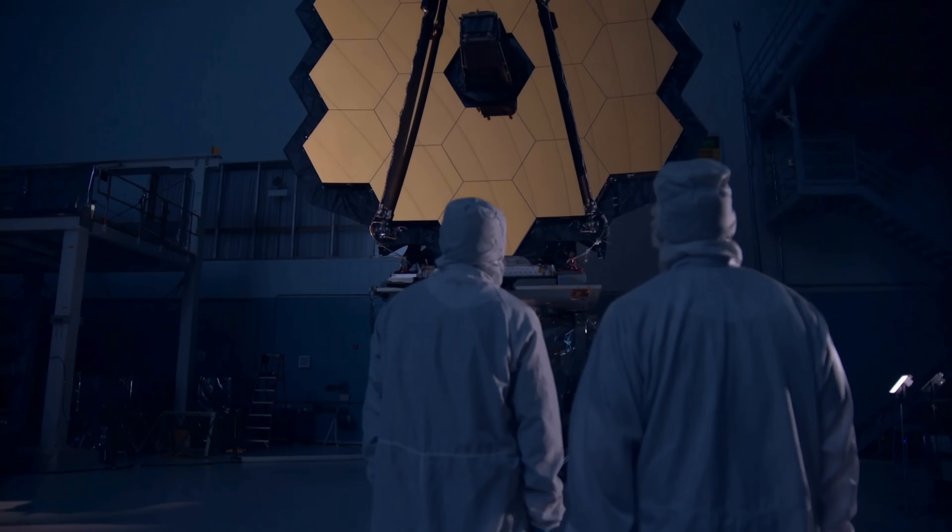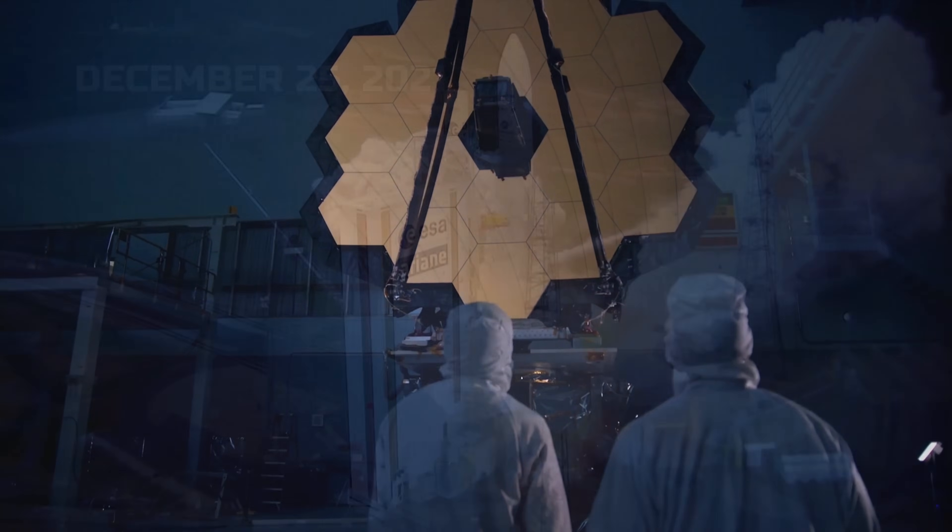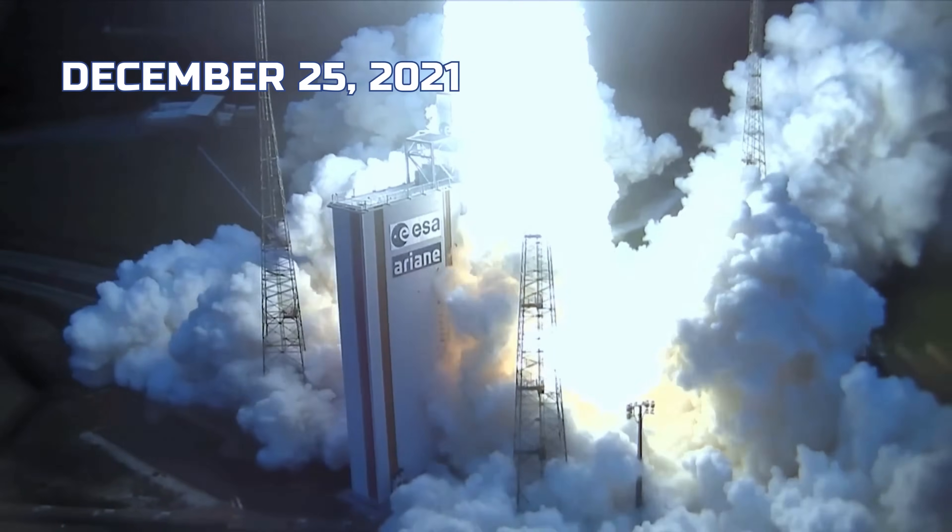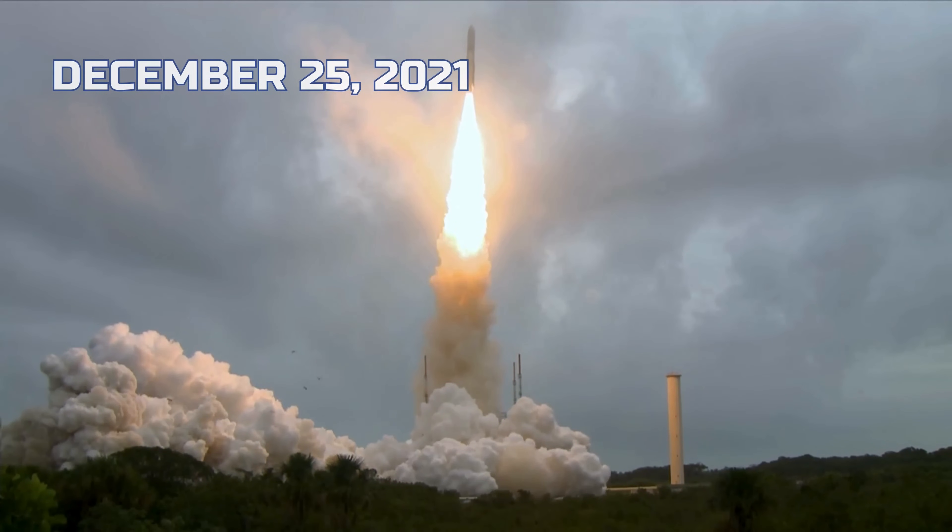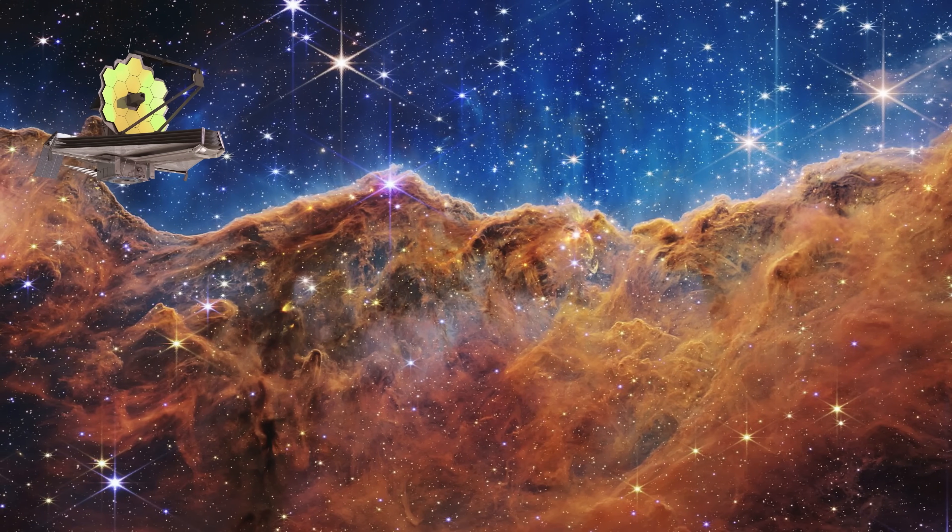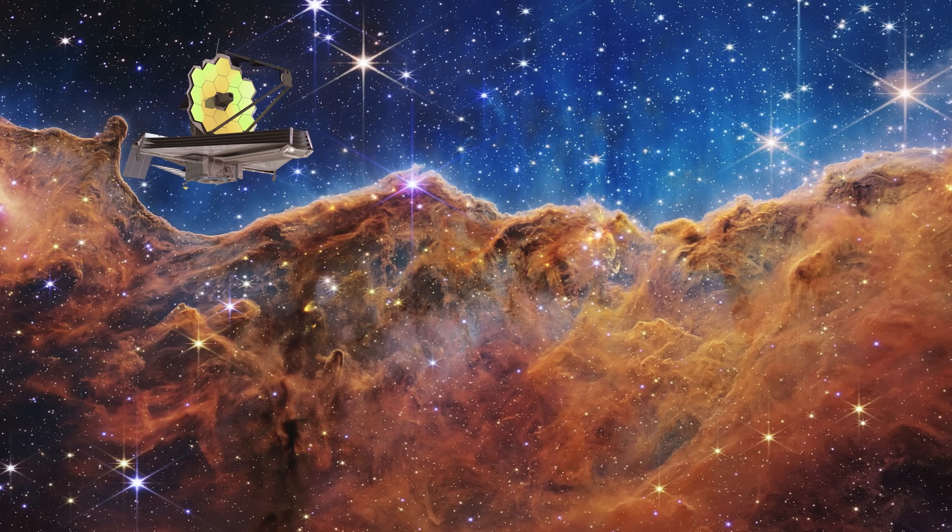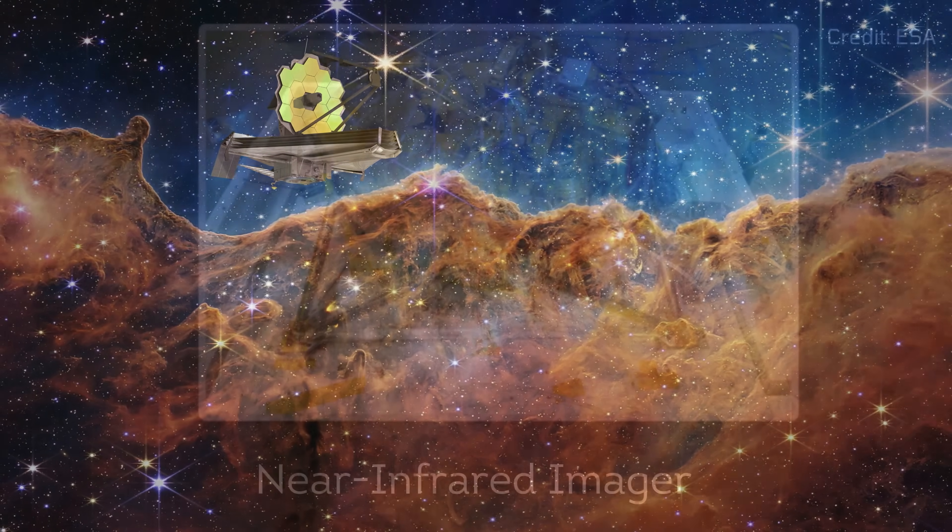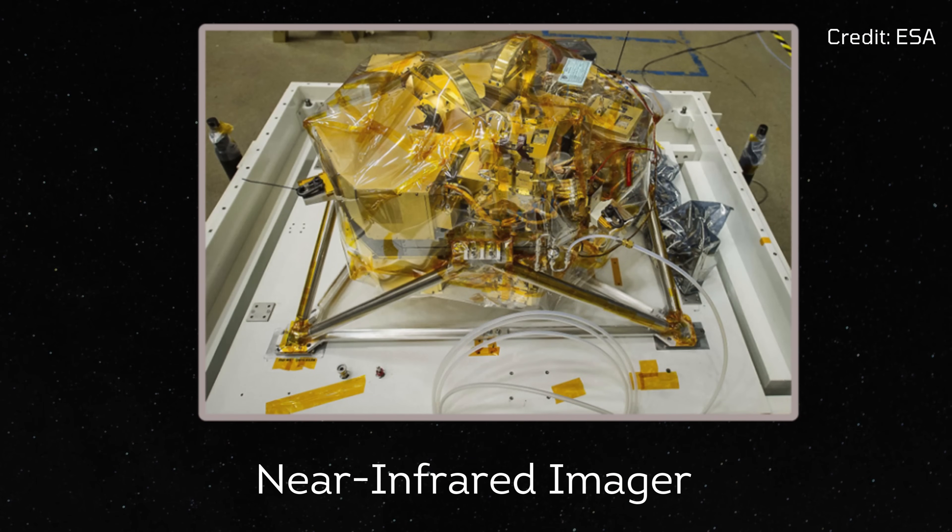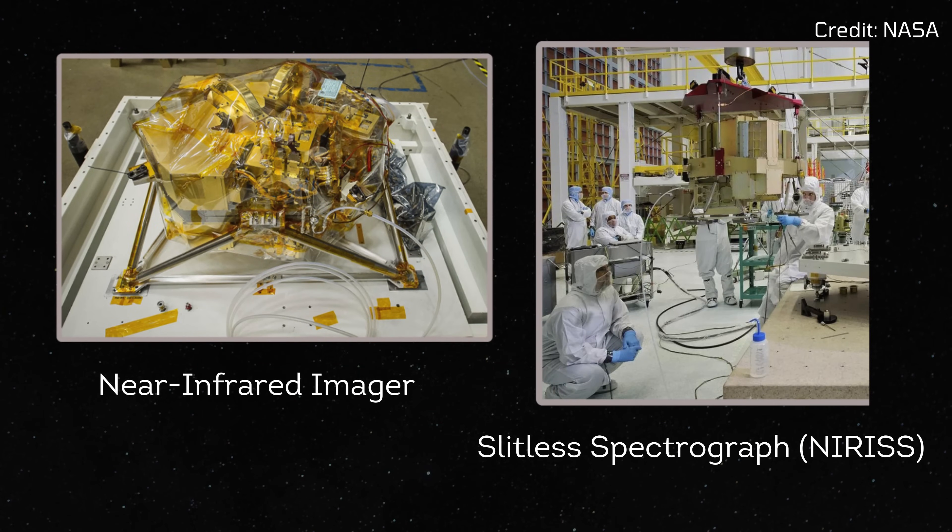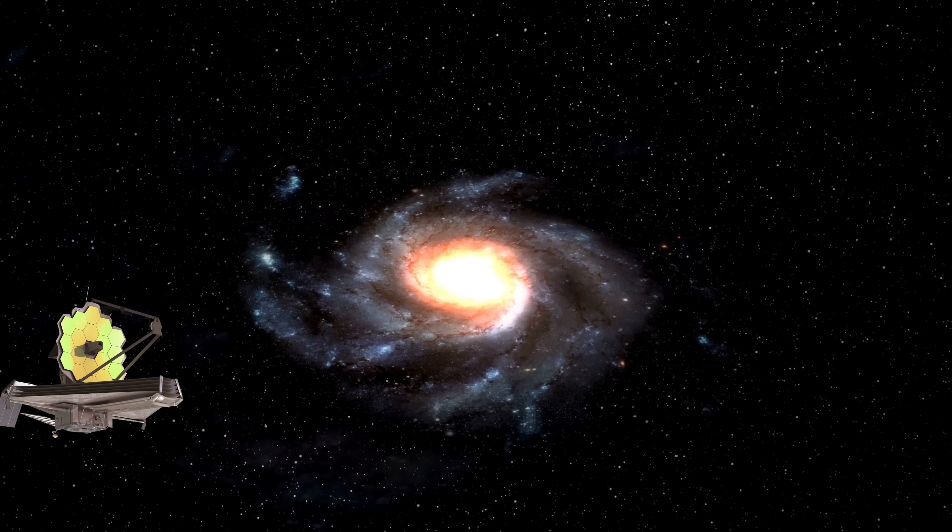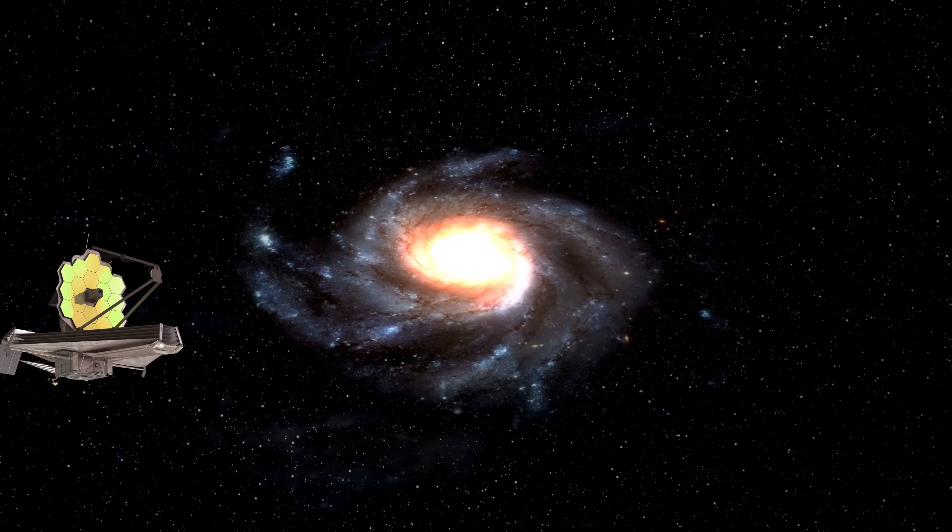Let's learn about the James Webb Space Telescope, one of the largest ever built, launched on December 25, 2021. It uses advanced tools to capture light from distant planets that take years to reach. One key tool is the near-infrared imager and slitless spectrograph NIRISS, which detects faint light from these distant worlds.